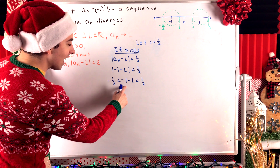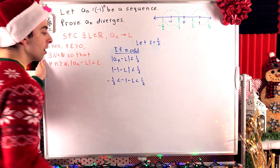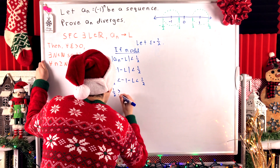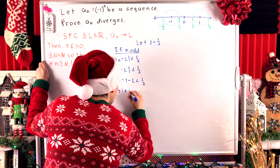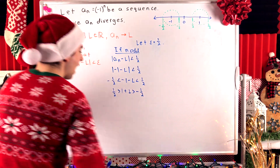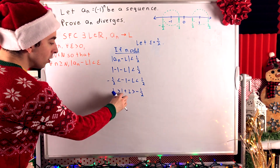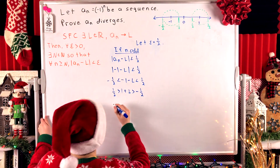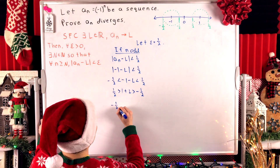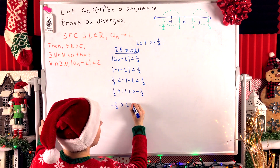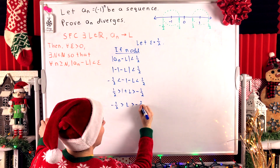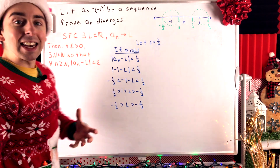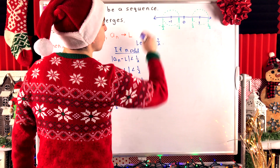Multiplying through by negative one (and flipping inequalities) gives 1/2 > 1 + L > -1/2. Subtracting one from all parts gives -1/2 > L > -3/2, meaning L must be between -3/2 and -1/2. This corresponds to the left interval on our number line picture.